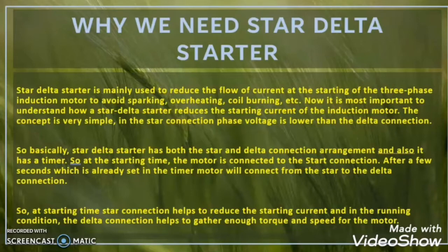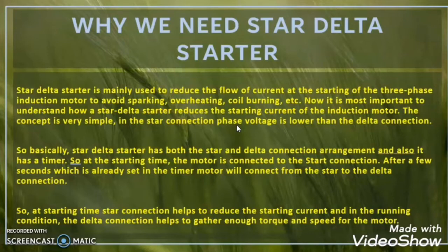As the inrush current is temporary in the induction motor — once the motor reaches 80% of its rated speed, the inrush current will vanish. At that point, the star delta starter gives the full rated voltage and rated current to the induction motor to achieve its required torque and speed. So the concept is clear: give reduced voltage and current during starting, then switch to rated values once the motor reaches 80% of rated speed.